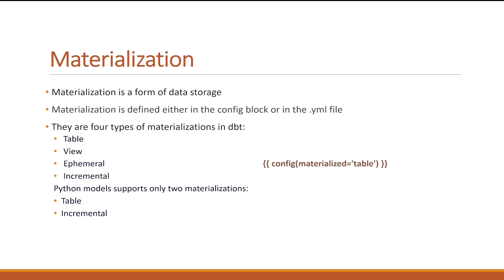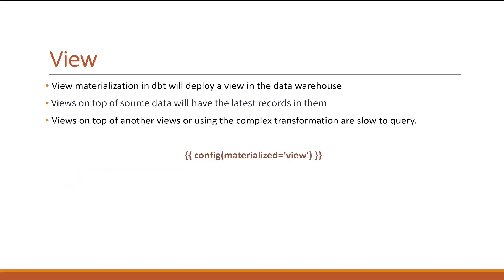Materialization is defined either in the config block or in the yml file. There are four types: table, view, ephemeral, and incremental. Python model supports only two types: table and incremental.